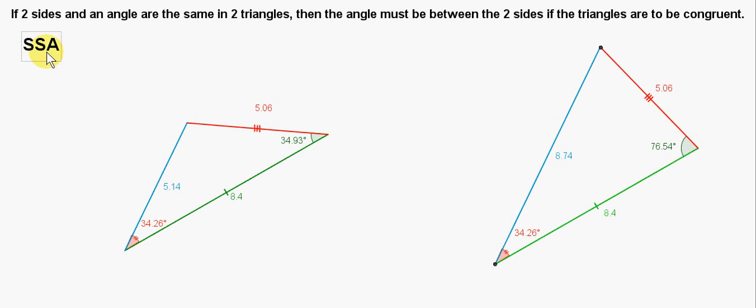We could abbreviate the situation here as SSA, which stands for side side angle. So the red side, the green side and this angle are the same in both triangles. And this is not a sufficient condition for both triangles to be congruent.